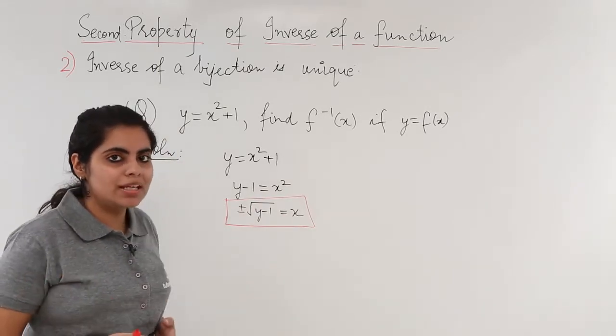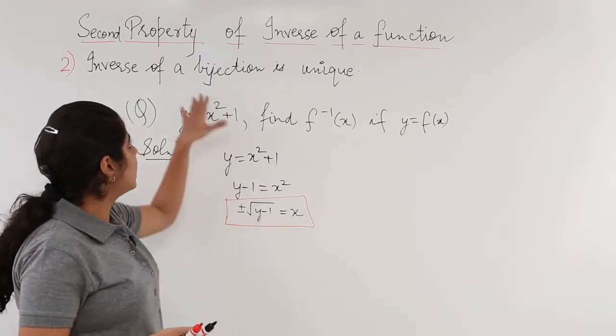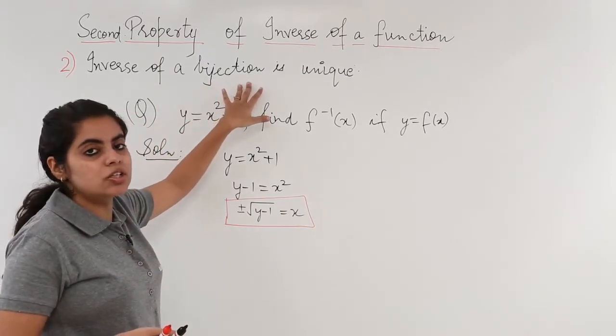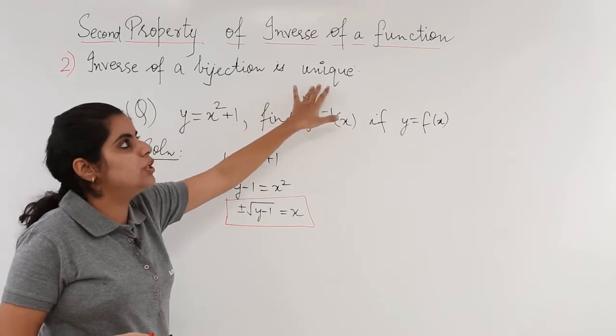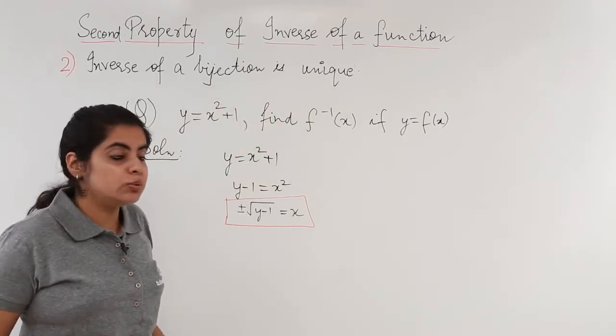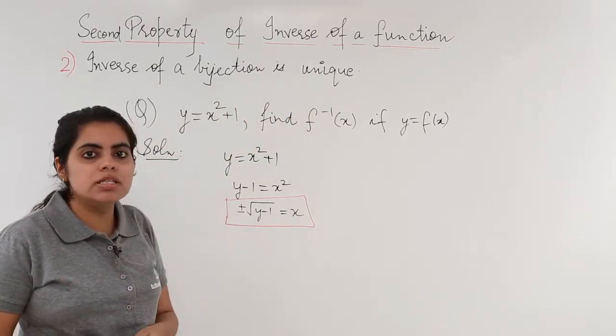But what did the property say? The property said that inverse of a bijective function, inverse of a bijection should be unique. If inverse should be unique, how can we get two inverses?